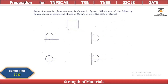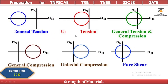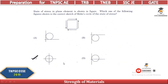The state of stress in a plane element is shown. Which figure shows the correct Mohr's circle? Examining the element: direct stress is zero and only shear stress acts — this is a pure shear stress condition. In pure shear, the center of the Mohr's circle is at the origin. The answer is Option C.